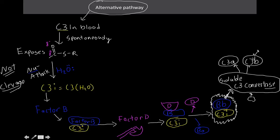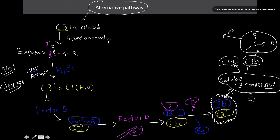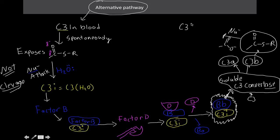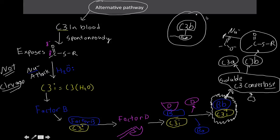Once C3 is cleaved, the C3 thioester bond is also exposed, making it subject to another nucleophile attack. In this context the nucleophile is not water but a much stronger one — presumably the carboxylate end of a protein, in this case a protein on the pathogen surface. This results in C3 beta becoming covalently attached to the surface of the pathogen, leading to opsonization.